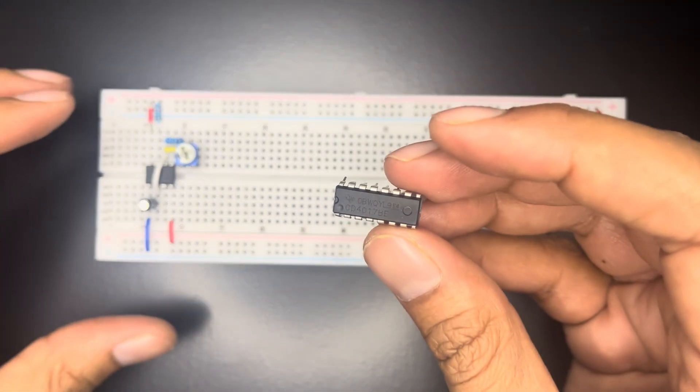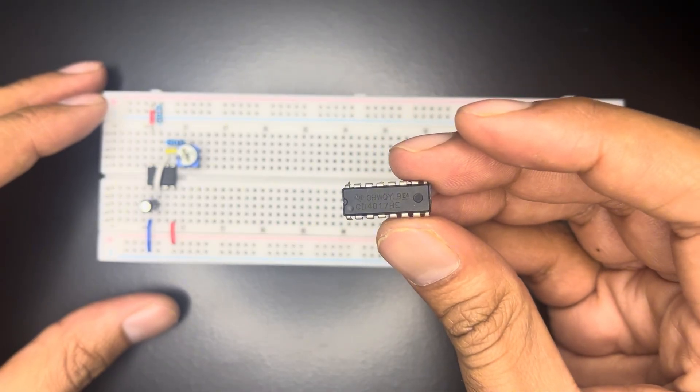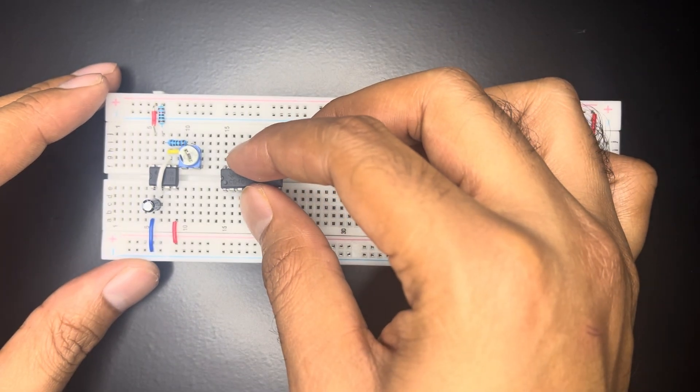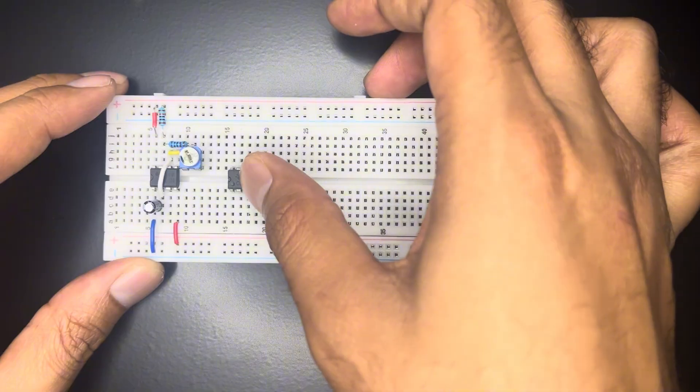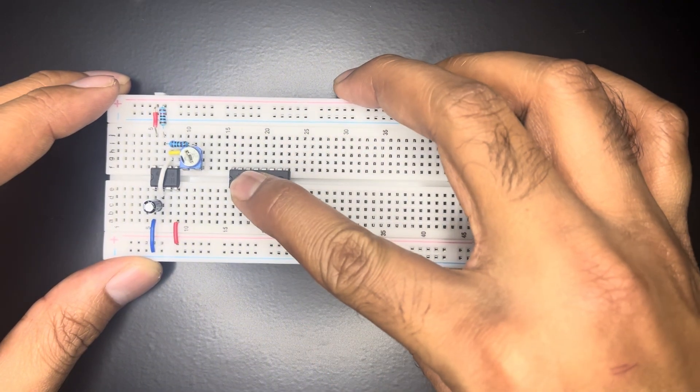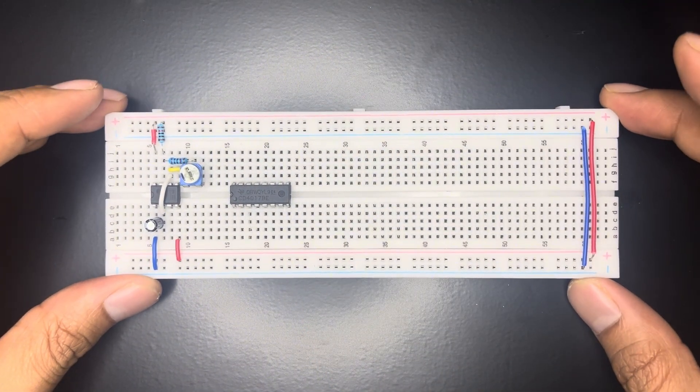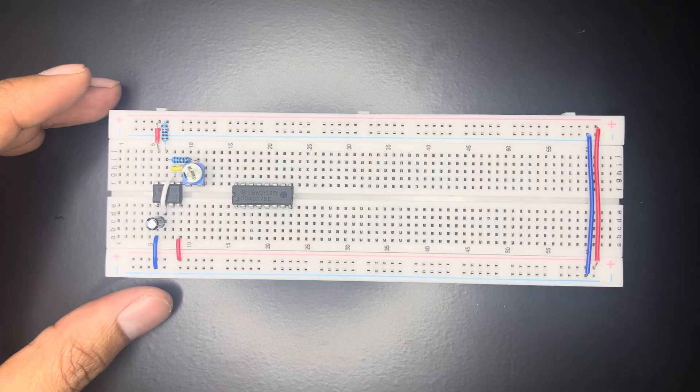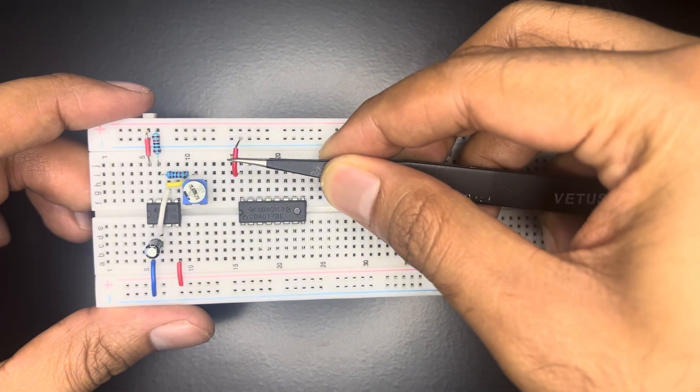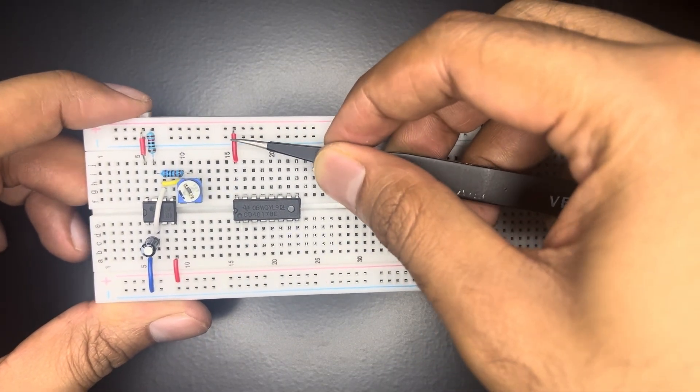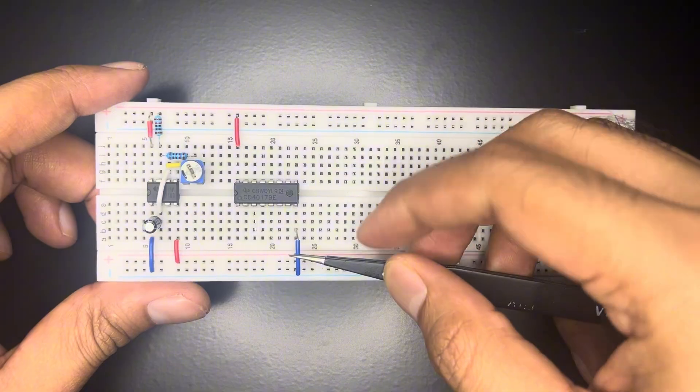Now place CD4017 IC onto the breadboard. The CD4017 IC is a decade counter which means it counts clock pulses and activates one output at a time in sequence. Pin 16 is connected to 9V to power the IC. Pin 8 is connected to ground.